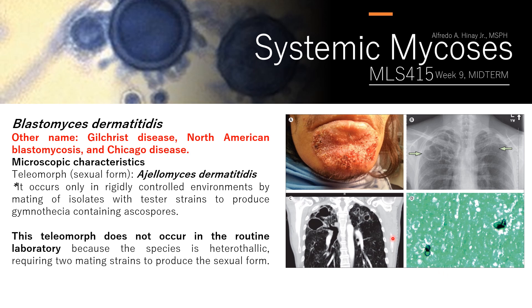For microscopic characteristics, the telomorph or sexual form of Blastomyces dermatitidis is Ajellomyces dermatitidis, which occurs only in rigidly controlled environments and is therefore not common in the laboratory. Take note that the species is heterothallic, meaning it cannot self-reproduce — it requires a mating partner.